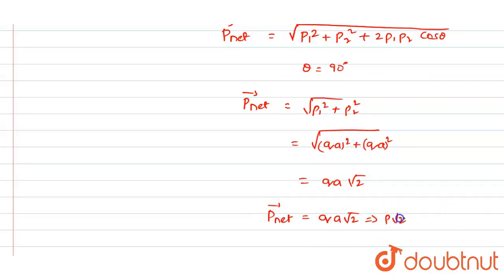But we will consider qa√2 as the value of the P_net vector. This is the correct answer for the dipole moment of the entire system.